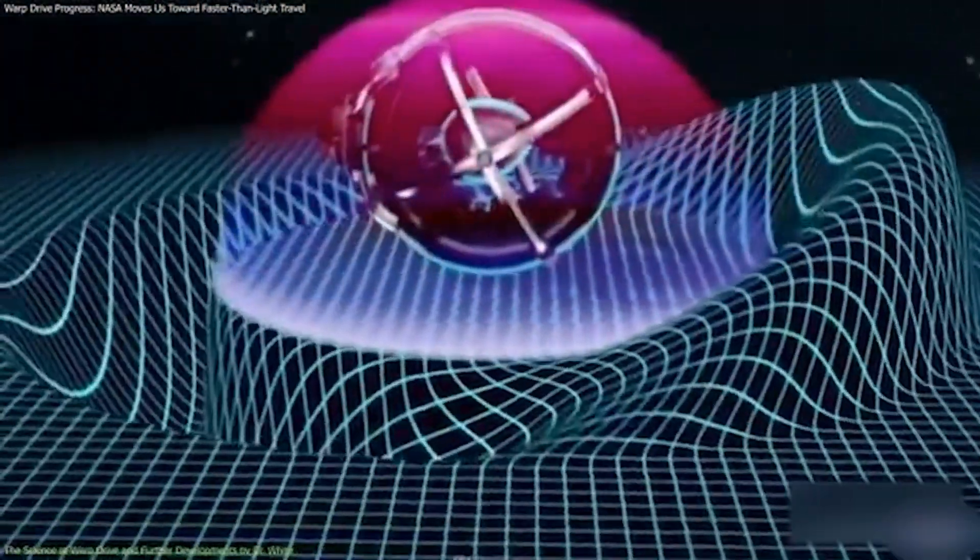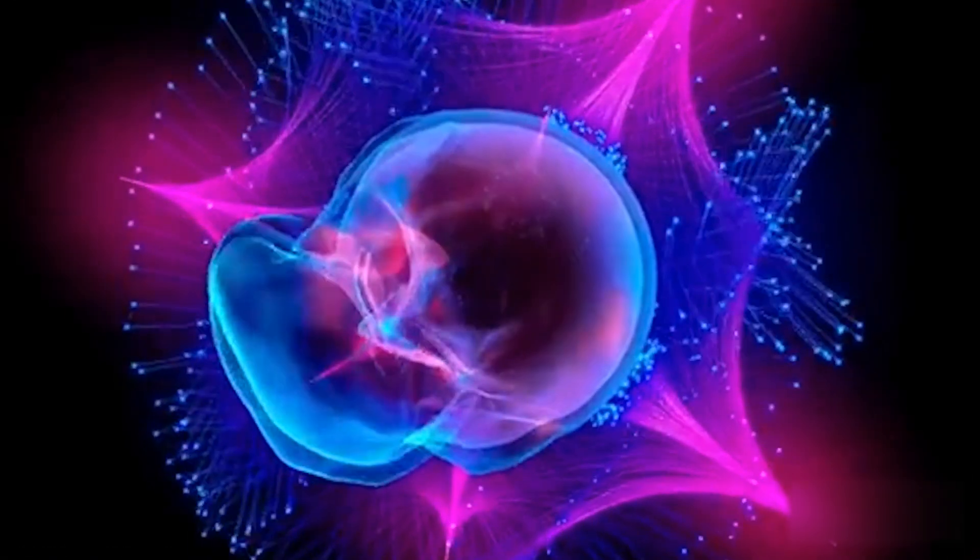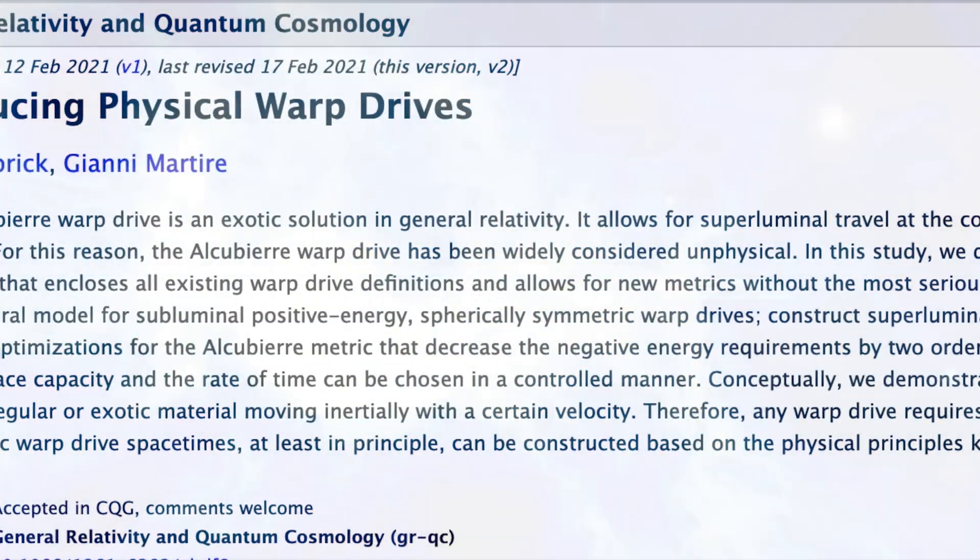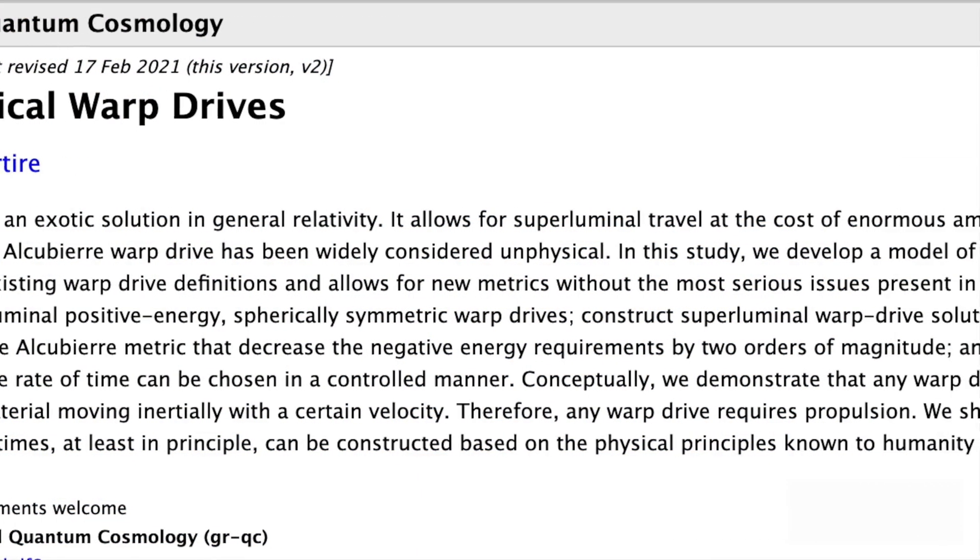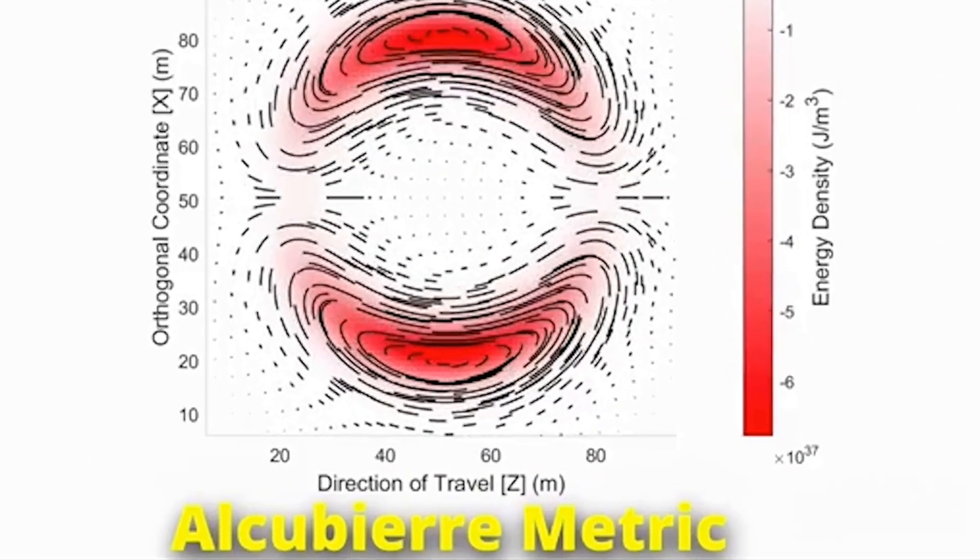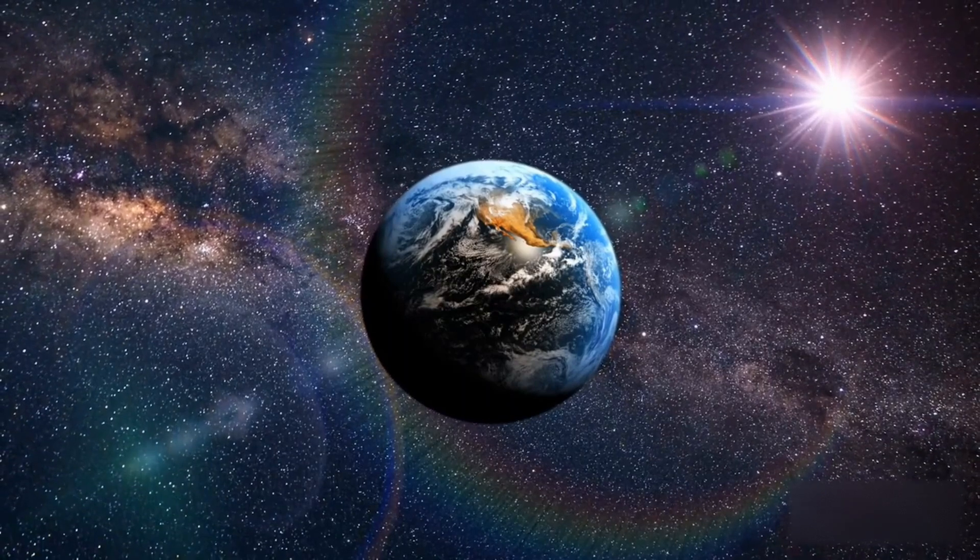But there's a catch. It used to need something that scientists have called negative energy, which doesn't exist in our world. Now the twist is, new research says we might not need that weird stuff at all. Instead, we'd need a ton of energy, like the equivalent to converting the mass of an entire planet.